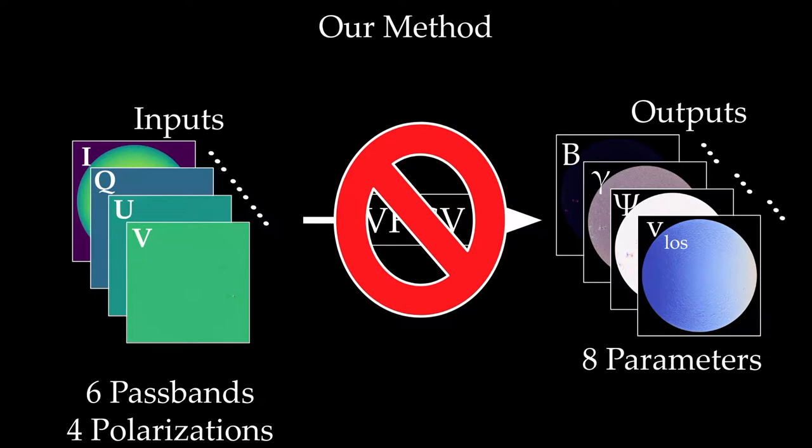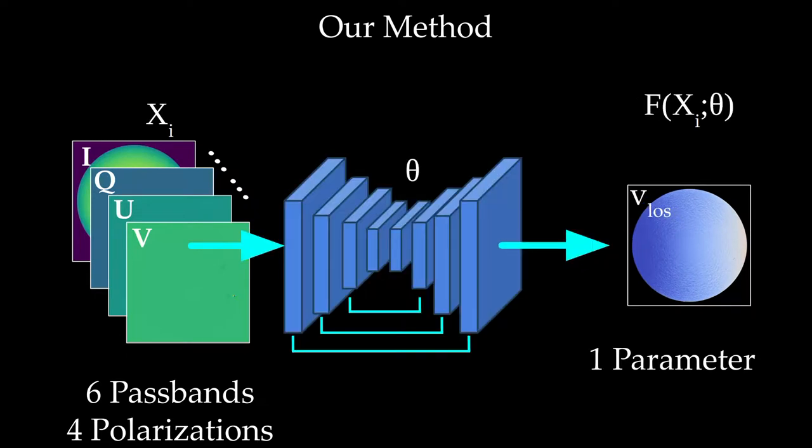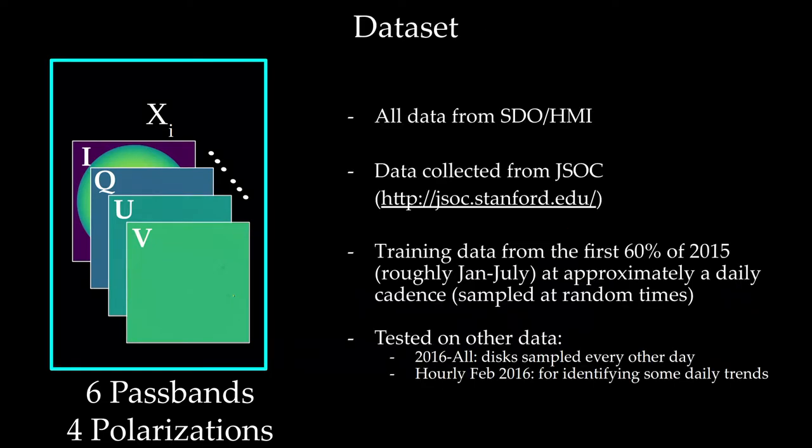So we replace this, and this is going to be our contribution here, is that we propose a system that can emulate this, but very quickly on the order of seconds, and all it does is it uses a feed-forward neural network system instead of some iterative optimization to go the other way. So the data that we use is collected or downloaded from JSOC. It comes from the satellite, and training data comes from the first 60% of 2015, and test data comes from various sections of 2016.